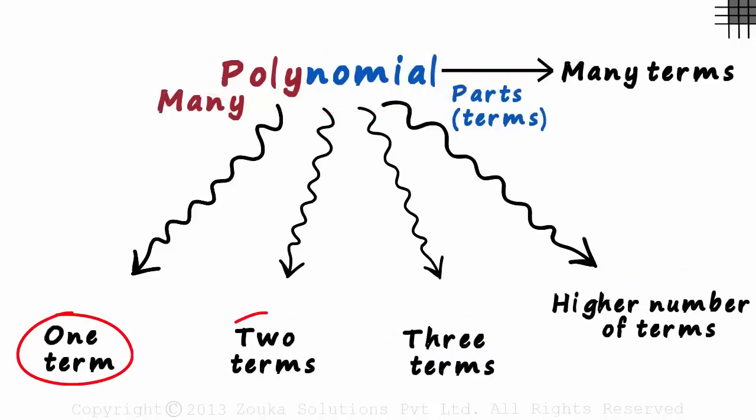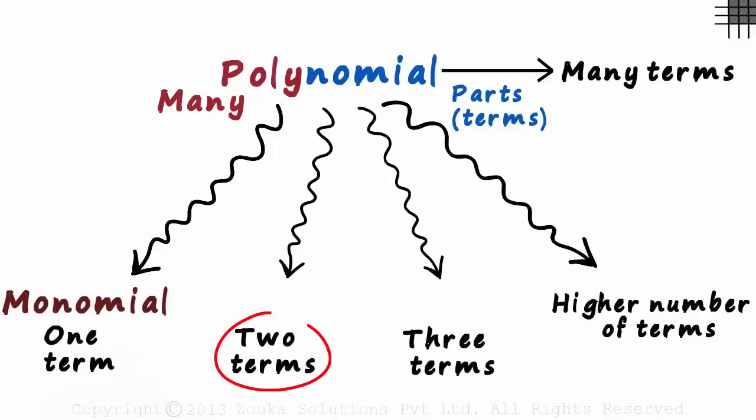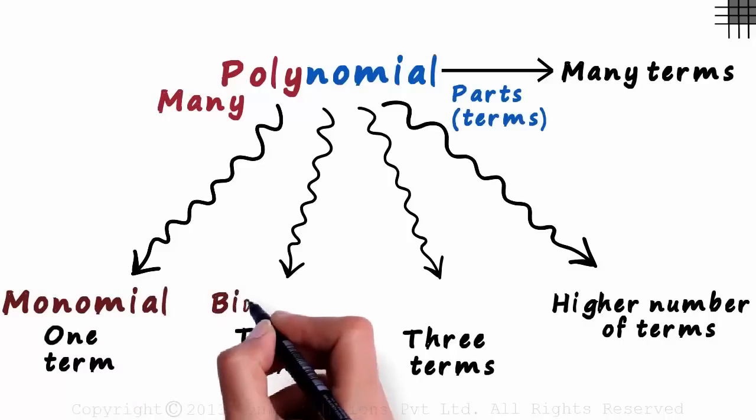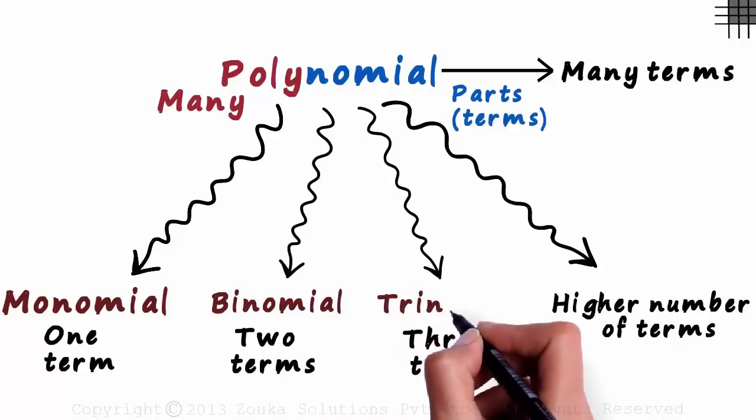Expressions with just one term, two terms or three terms are given special names. An expression with one term is called monomial. An expression with two terms is called a binomial. And an expression that has three terms is called a trinomial.